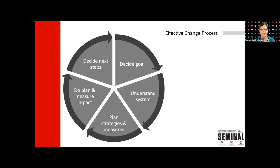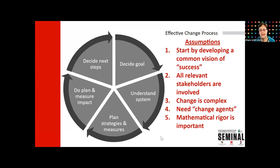The change process starts with: what is the actual goal — hopefully a student-centered and equity-focused goal. Then understanding the system: who are the people, what are the power dynamics, what strategies are you going to try, and how are you going to measure your change? Because not all change is an improvement. Then you do it, measure what happened, and decide what you are doing next. We assume that developing a common vision of what success is — so we're all working toward the same thing — is essential, along with having many different relevant stakeholders involved inside and outside the department.